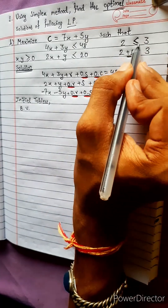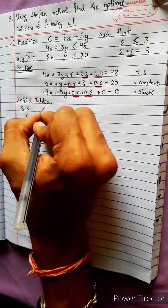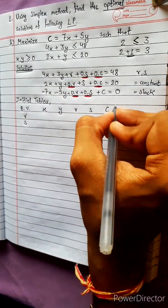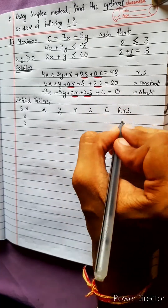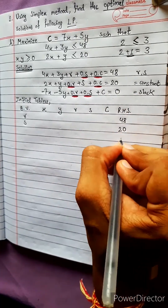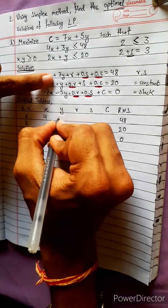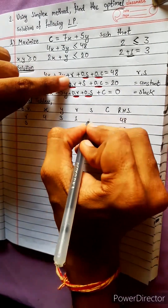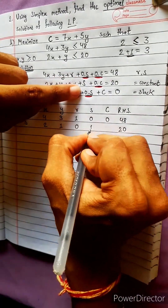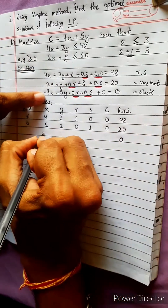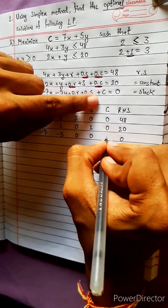This is the slack variable. Rs is the same: x, y, rs, right-hand side. Right-hand side: 48, 20, 0. Our tableau: 4x 3y 1r 0s 0c | 48; 2x 1y 0r 1s 0c | 20; minus 7x minus 5y 0r 0s 1c.